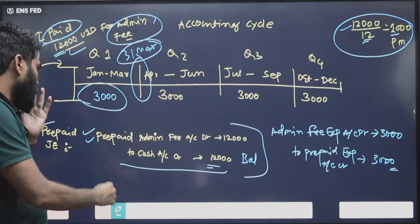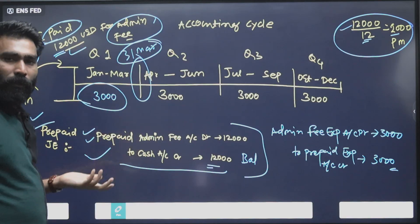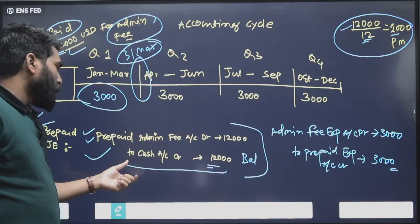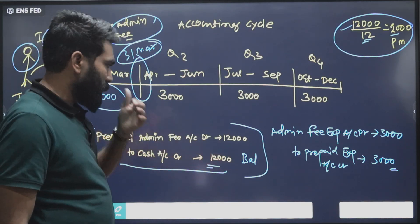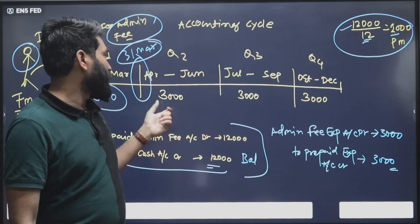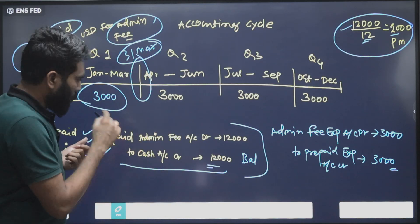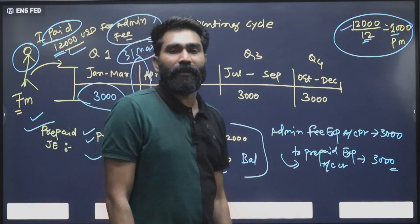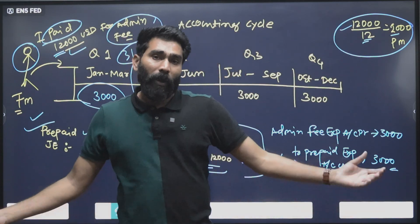We prepare basically two journal entries: one when we actually paid all the fees for the entire year, that's how you prepare this journal entry. And when you actually amortize, convert the prepaid into expense, that's how we prepare this entry.